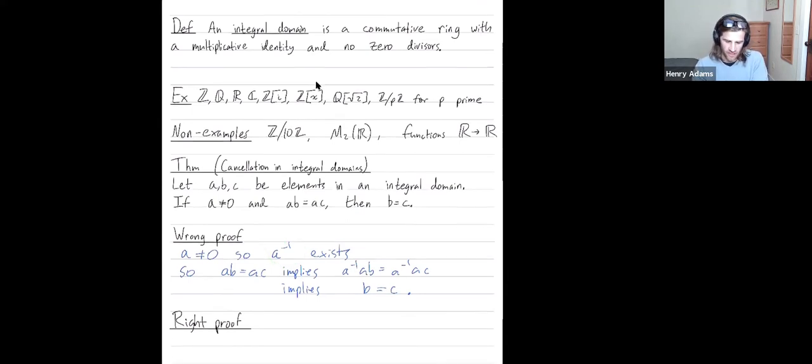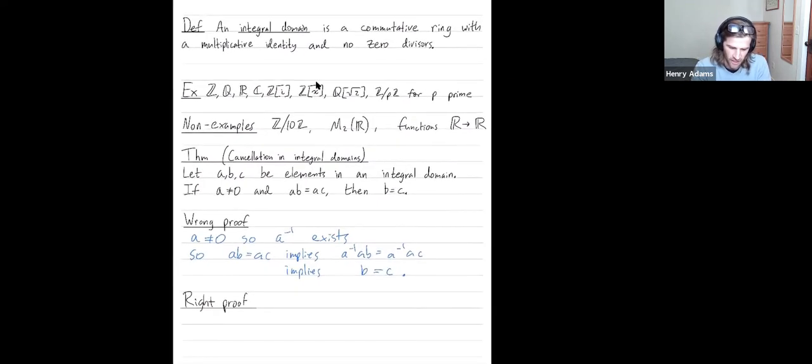The right proof is going to be this nice mix of addition and multiplication. So ab equals ac implies, let's subtract ac from both sides, ab minus ac is equal to zero. So I'm using addition subtraction. Now I'm using the distributive property. There's another way to write ab minus ac. It's a times b minus c.